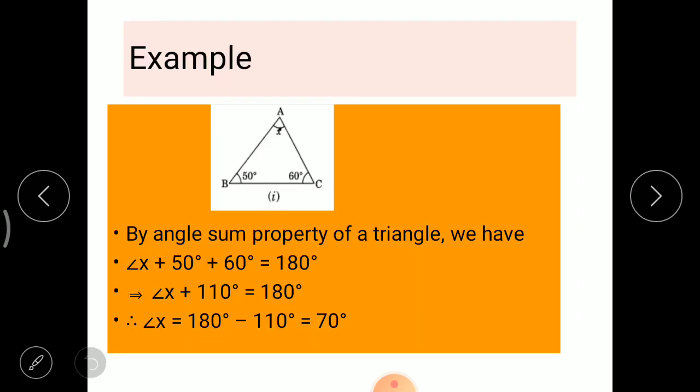Have a look on an example. Here we have to find the angle A which is x where angle B is 50 degrees and angle C is 60 degrees. By the angle sum property of the triangle, we can say angle x plus angle 50 plus 60 degrees equals to 180 degrees.